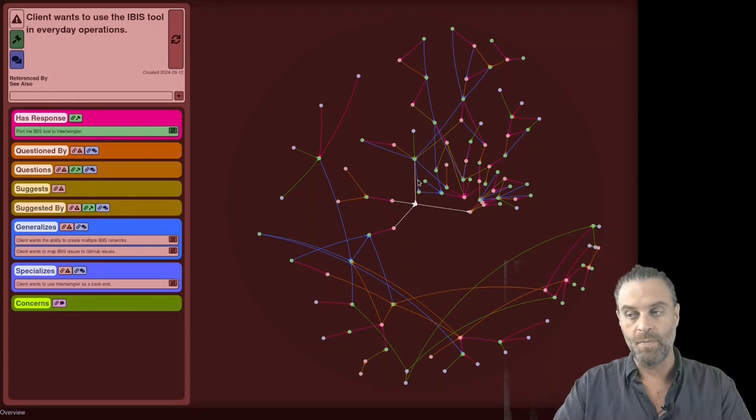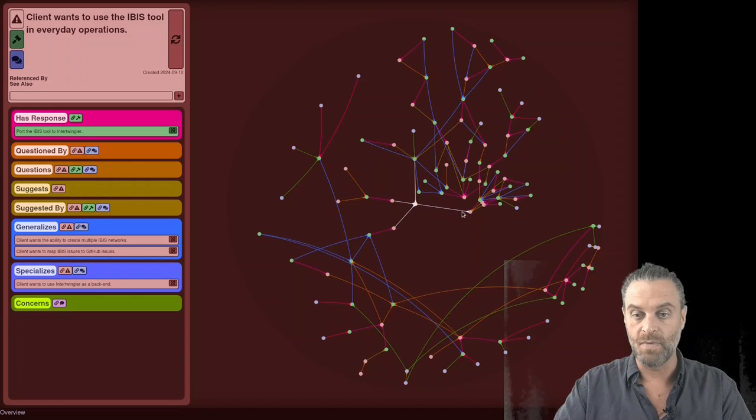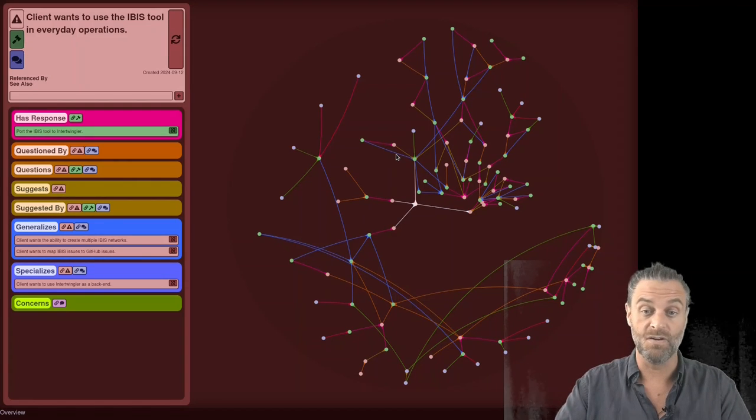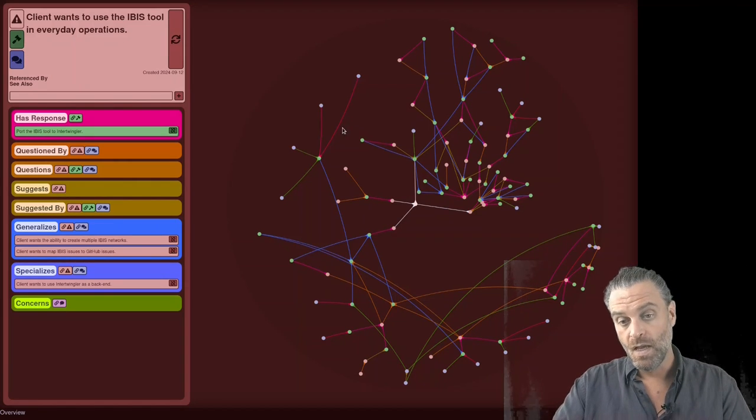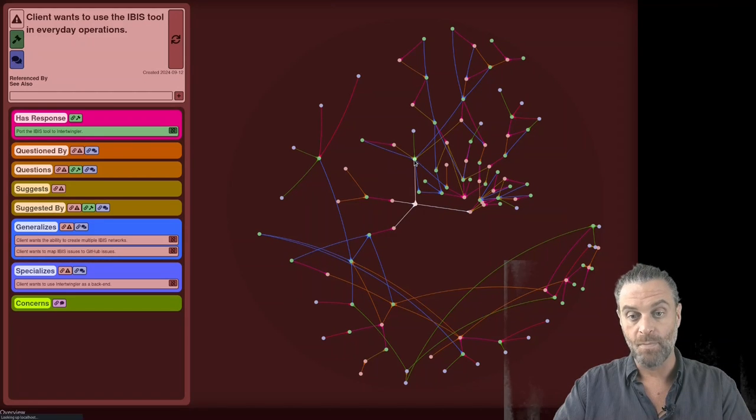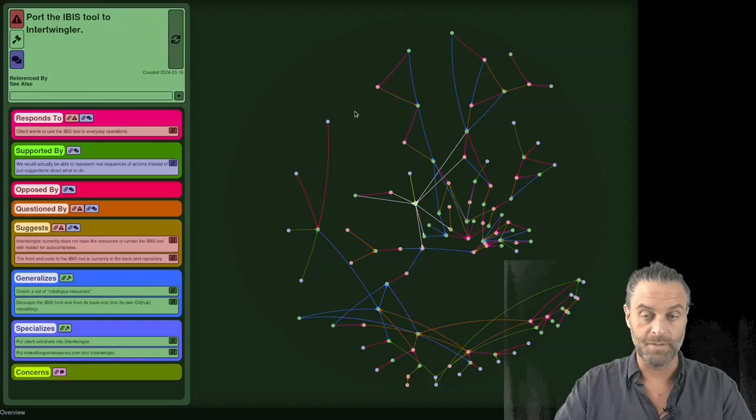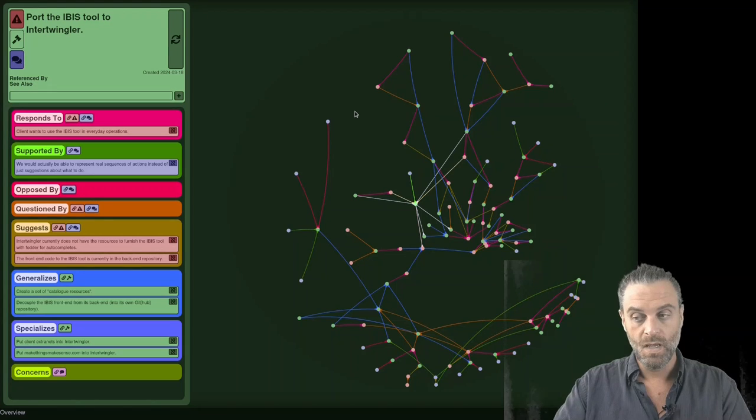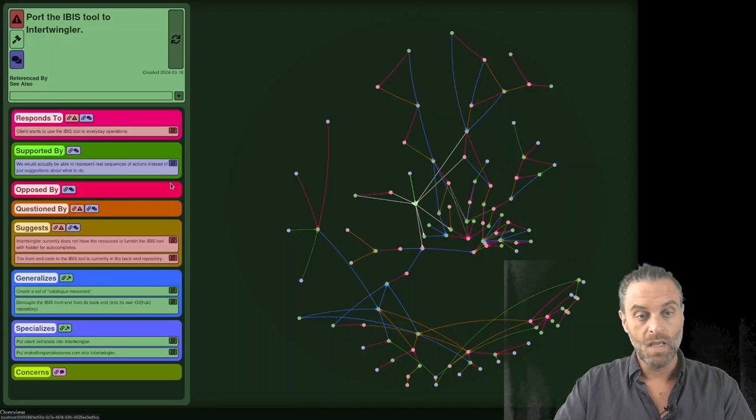As the name implies, there are three classes of entities and one of them is an issue. An issue is just a thing in the world that you want to do something about or steer around. Issues have positions to respond to them and a position is what to do about a particular issue.